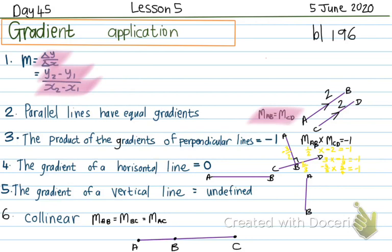Number 4: the gradient of a horizontal line is always 0, because it's about how steep a line is — a horizontal line is not steep at all. We also did an example of a horizontal line's gradient yesterday in the exercise. The gradient of a vertical line is undefined. That line is too steep, so the gradient will be undefined. Every single vertical line has a gradient that is undefined.